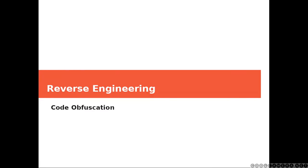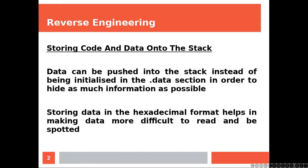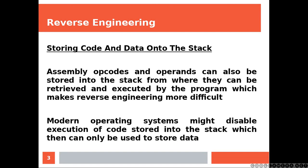Hi everyone, today we'll talk about code obfuscation. Data can be pushed into the stack instead of being initialized in the data section, in order to hide as much information as possible. Storing data in the hexadecimal format helps in making data more difficult to read and be spotted. Assembly opcodes and operands can also be stored into the stack, from where they can be retrieved and executed by the program, which makes reverse engineering more difficult. Modern operating systems might disable execution of code stored into the stack, which then can only be used to store data, as it should be.